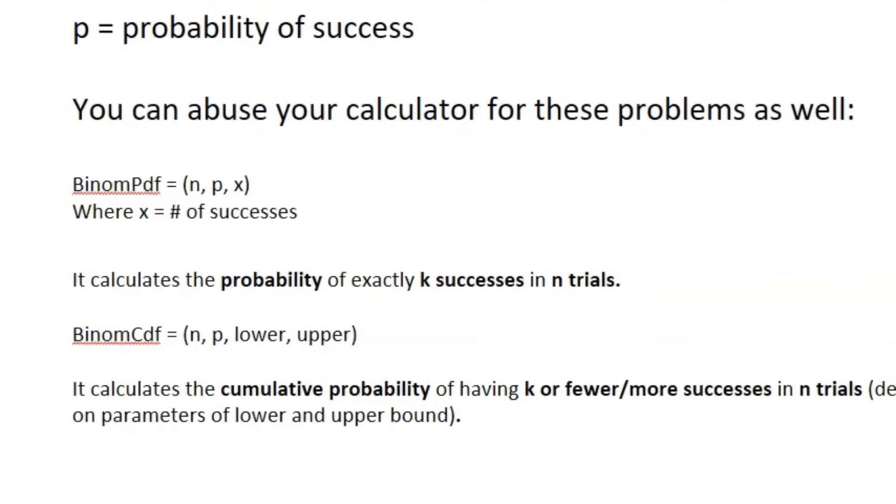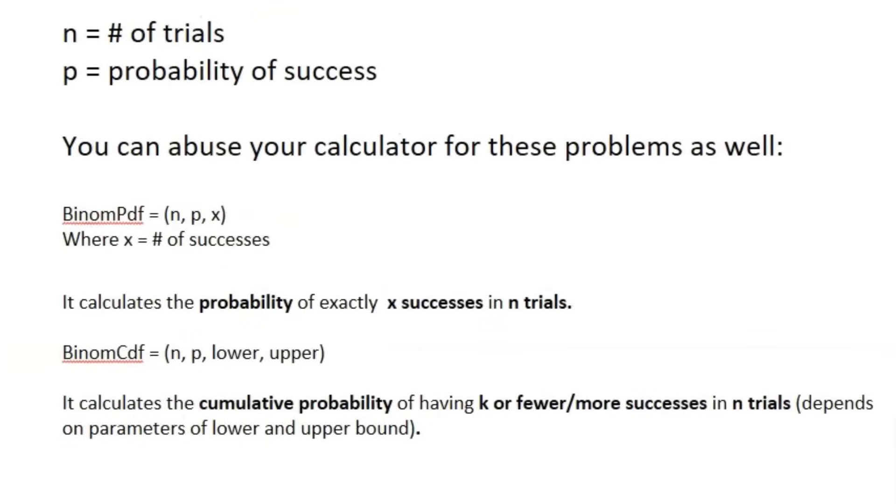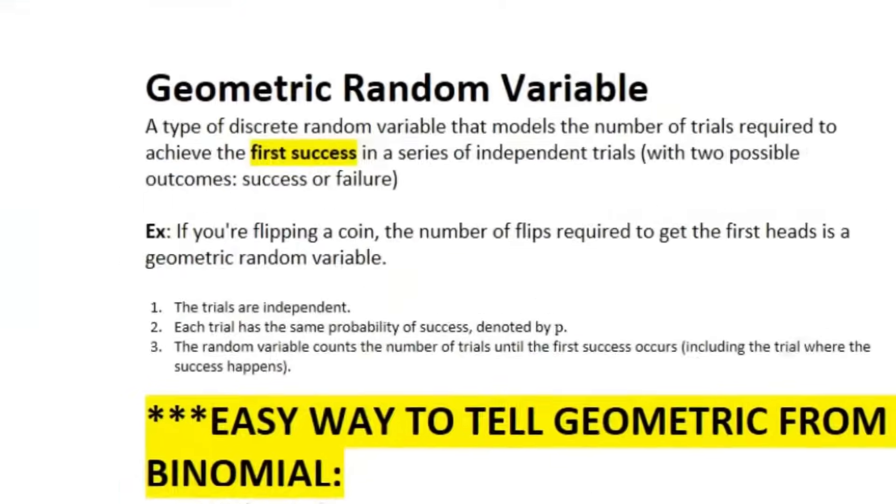So here are the calculator commands. You've got binomial PDF. That's just N-P-X. So N is number of trials. P is probability of success. X is the number of successes. And it calculates the probability of exactly X number of successes in N trials. Binomial CDF, N-P, lower and upper bound. It's the same thing except it's the cumulative probability of having K or fewer or more successes in N number of trials. It really depends on the parameters that you put for the lower or upper bound.